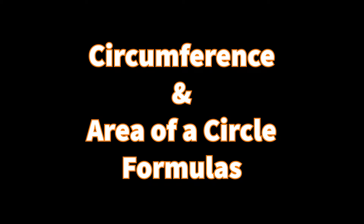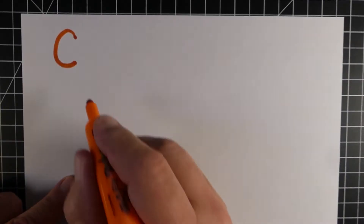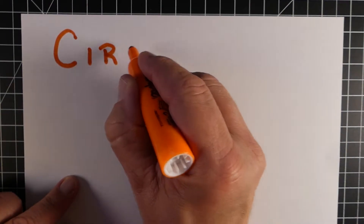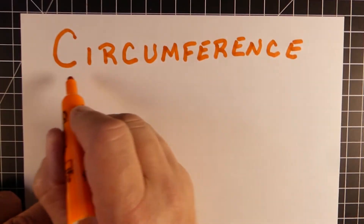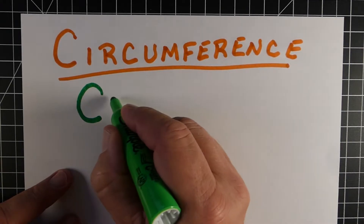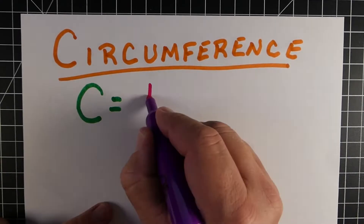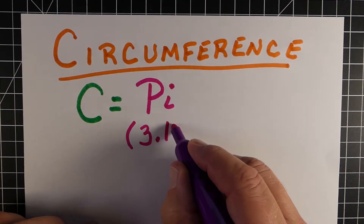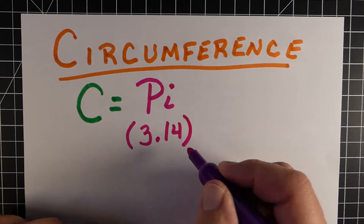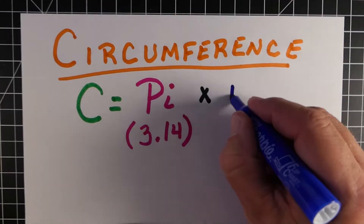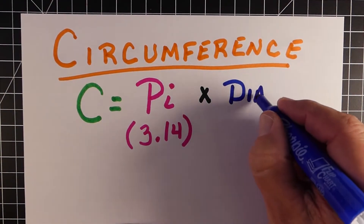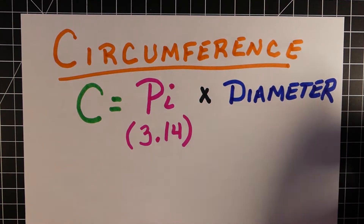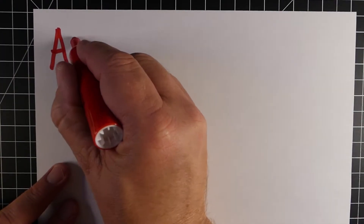Before we start converting an area of a circle into the circumference, we need to review a couple of our formulas. The first one is circumference. To find the circumference, our formula is pi times the diameter. For this video, we're going to use 3.14 for pi. So pi times the diameter gives us our circumference, or the distance around a circle.